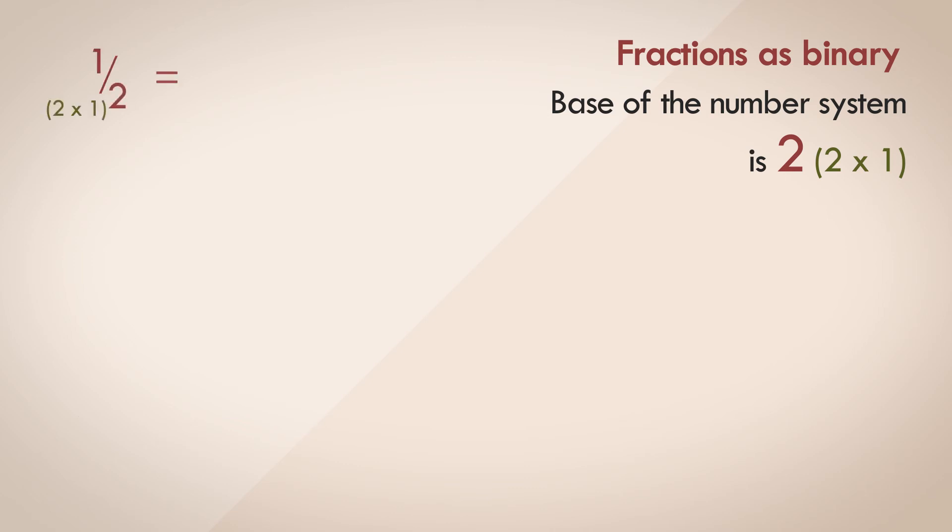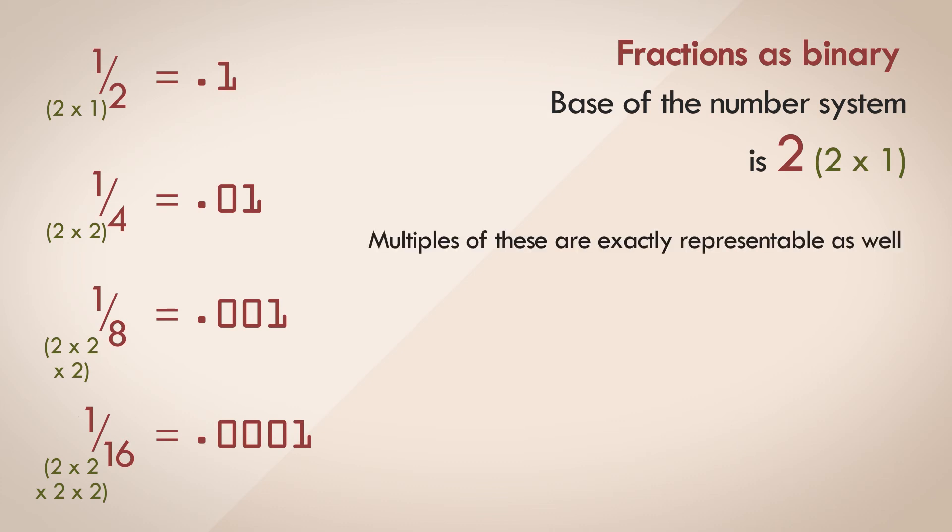So numbers like 1 half, or 1 fourth, or 1 eighth, or 1 sixteenth, can be represented exactly in a fixed number of digits. Of course, multiples of these are exactly representable as well, like 3 eighths, or 7 sixteenths. But some fractions in the decimal number system which give you an exact value, fail to do so in the binary number system.